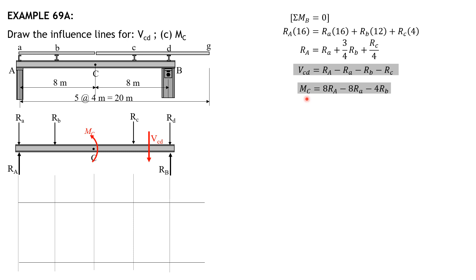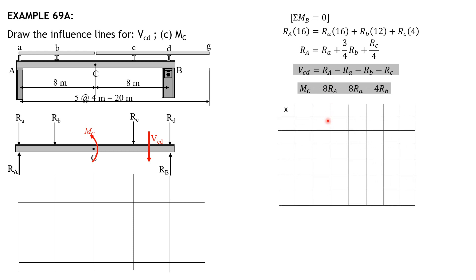We need to compute R sub capital A, r sub small a, r sub small b, and r sub small c. These are used to derive R sub A and the other functions. When x is zero, the load is at point A. The functions to be solved are: r sub small a, r sub small b, r sub small c, R sub capital A, shear in panel CD, and moment at C. When x equals zero, the load is at small letter a, so r sub small a is 1 and the rest are zero.